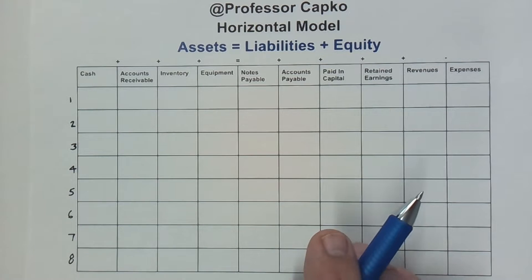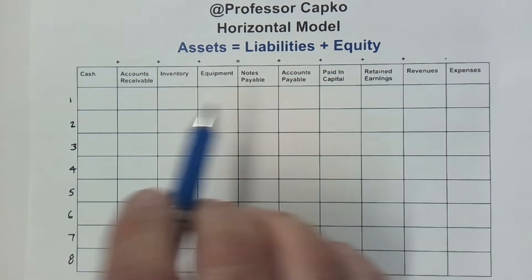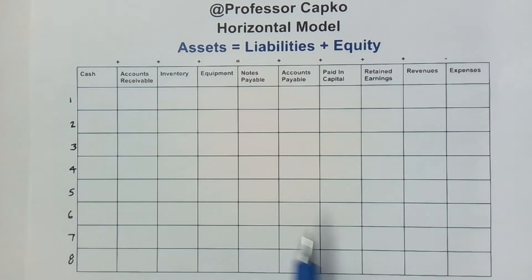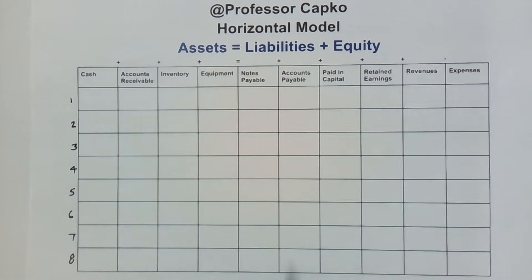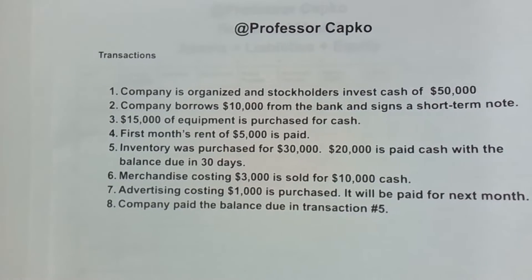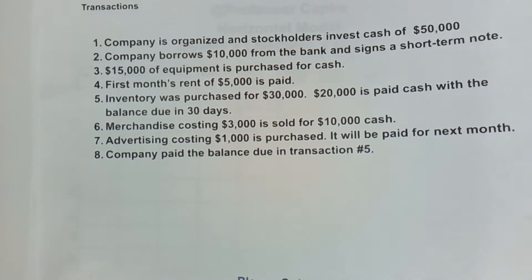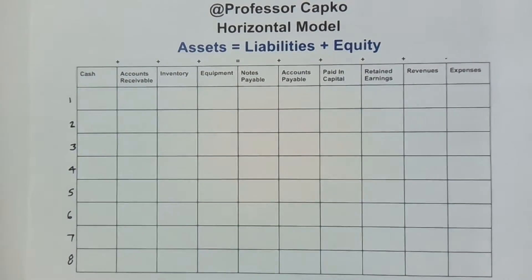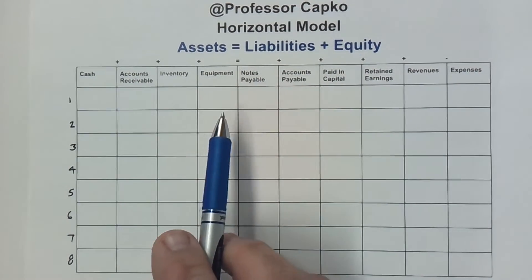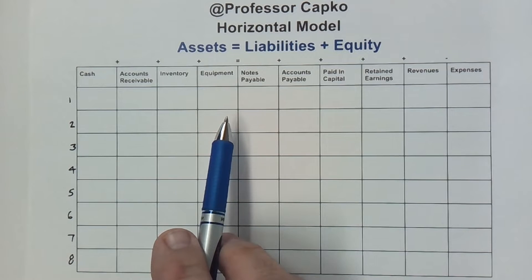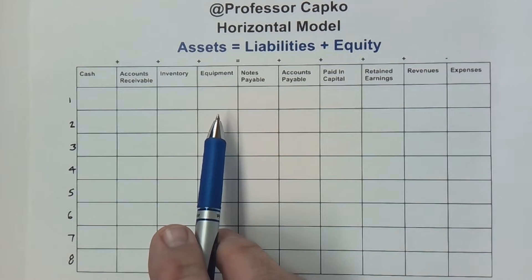In this video I'm going to cover how to use the horizontal model of accounting to track various transactions. I've got a list of eight transactions here that we're going to use as an example, and we're going to get into that in a moment, but I just want to go over a couple of things to start with.